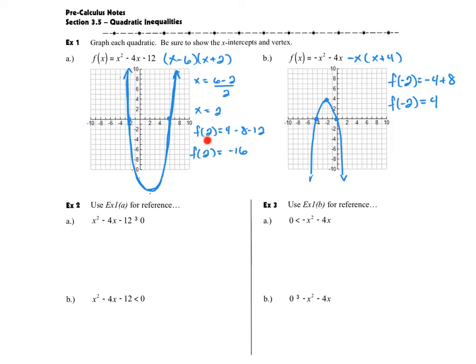I evaluated my function at 2 and that got me a negative 16. So I can see that the vertex of my graph is actually going to be off the grid that I've provided but that's okay. It doesn't matter. What really matters to us is these x-intercepts and then the direction of the opening for our graph.